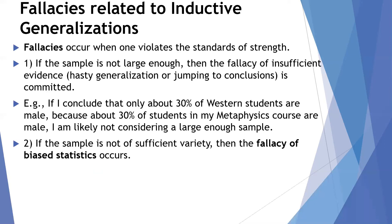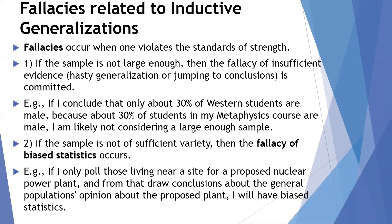A second fallacy occurs when you lack sufficient variety in your sample — the fallacy of biased statistics. For example, if you want to know the public's attitude toward building a nuclear power plant in Illinois and you only poll those living near the proposed site, then draw conclusions about the general population of the state, you will have biased statistics. You need to consider everyone if your goal is to know what everyone in the state thinks about the proposed nuclear power plant.